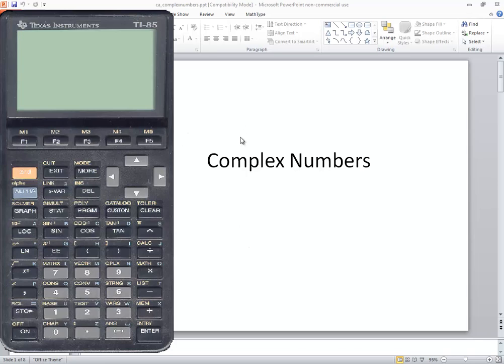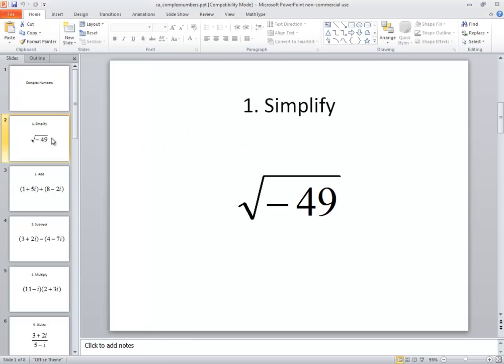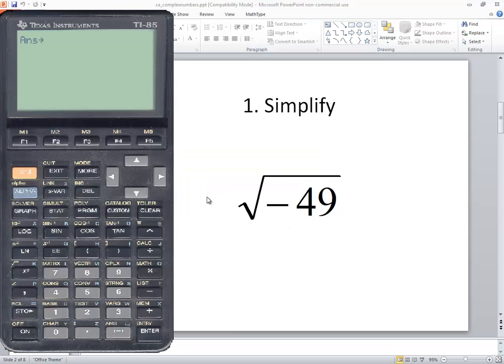Let's take a look at complex numbers on a TI-85 calculator. First, let's look at simplifying square root of negative 49.